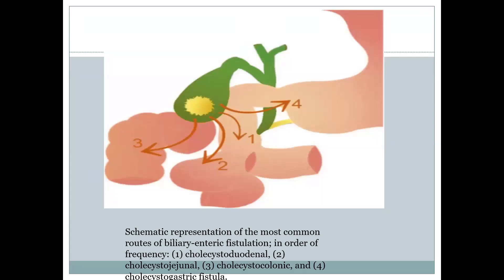Here you can see a schematic representation of the most common routes of biliary-enteric fistulation in order of frequency. The most common is cholecystoduodenal, followed by cholecystocolic, and the least common is cholecystogastric fistula.